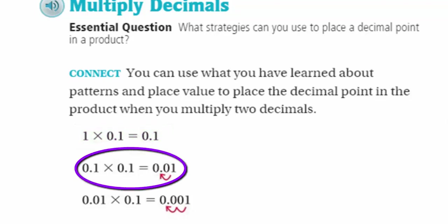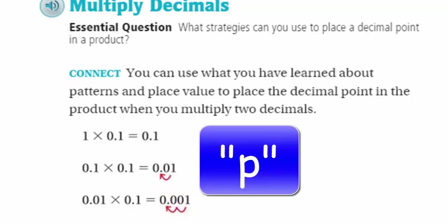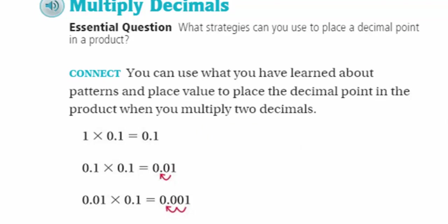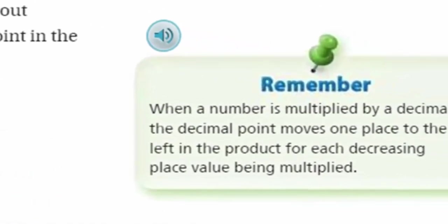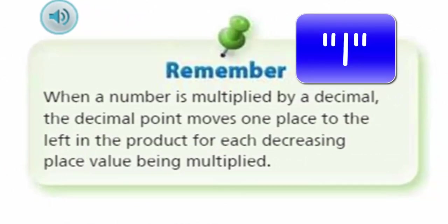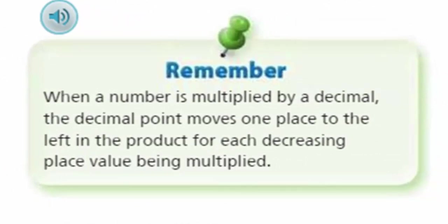But look what happens here. When we have 1/10 times 1/10, look at that, the decimal place moved. Now we have 1/100. And when we multiply 1/100 by 1/10, the decimal place moved even one more time to the left. Why does it matter where you put the decimal point in the product anyway? It does matter. If you place the decimal point in the wrong place, then the product is going to be too small or too large, even though the digits are in the correct order. Remember, when a number is multiplied by a decimal, the decimal point moves one place to the left in the product for each decreasing place value being multiplied.